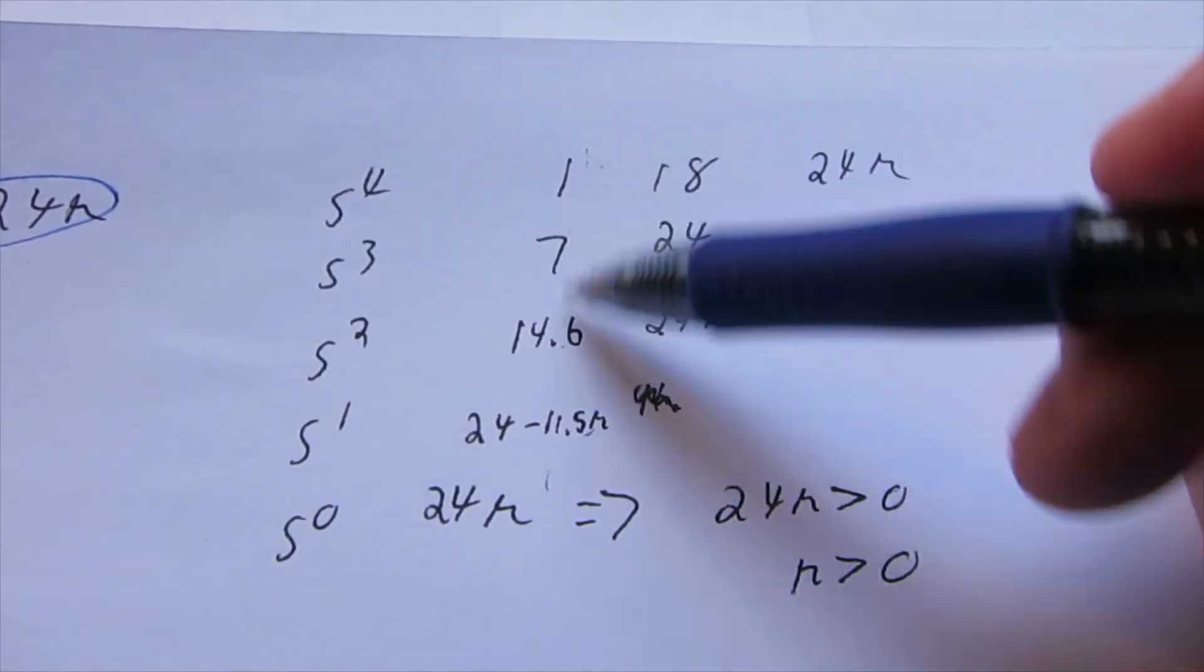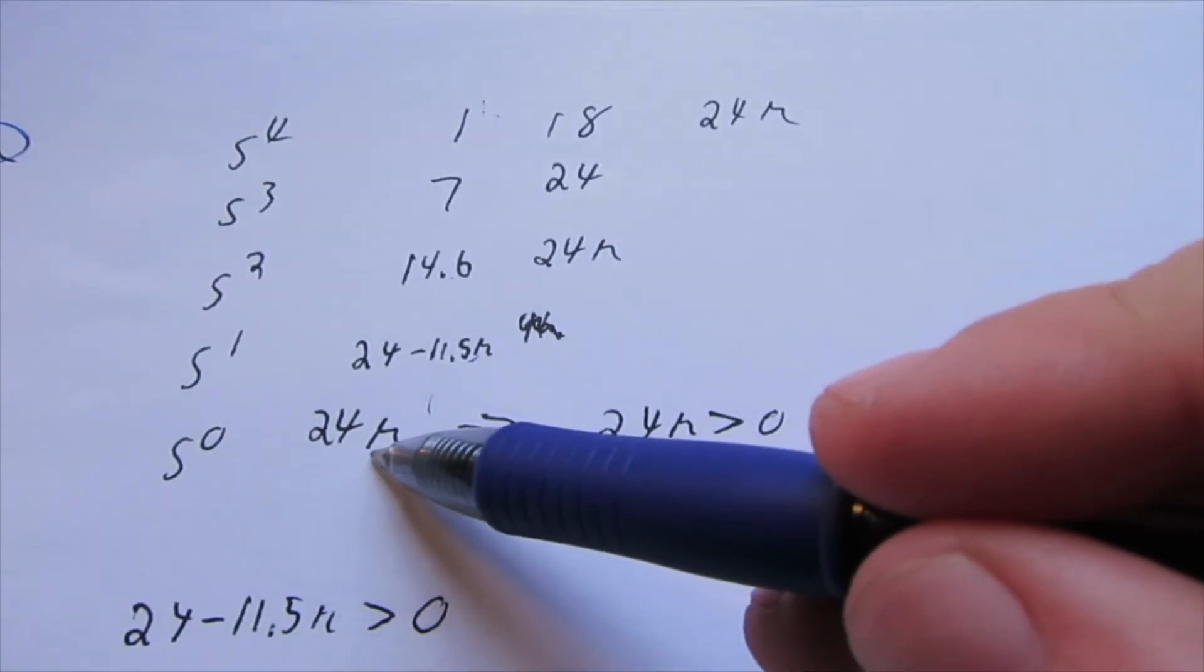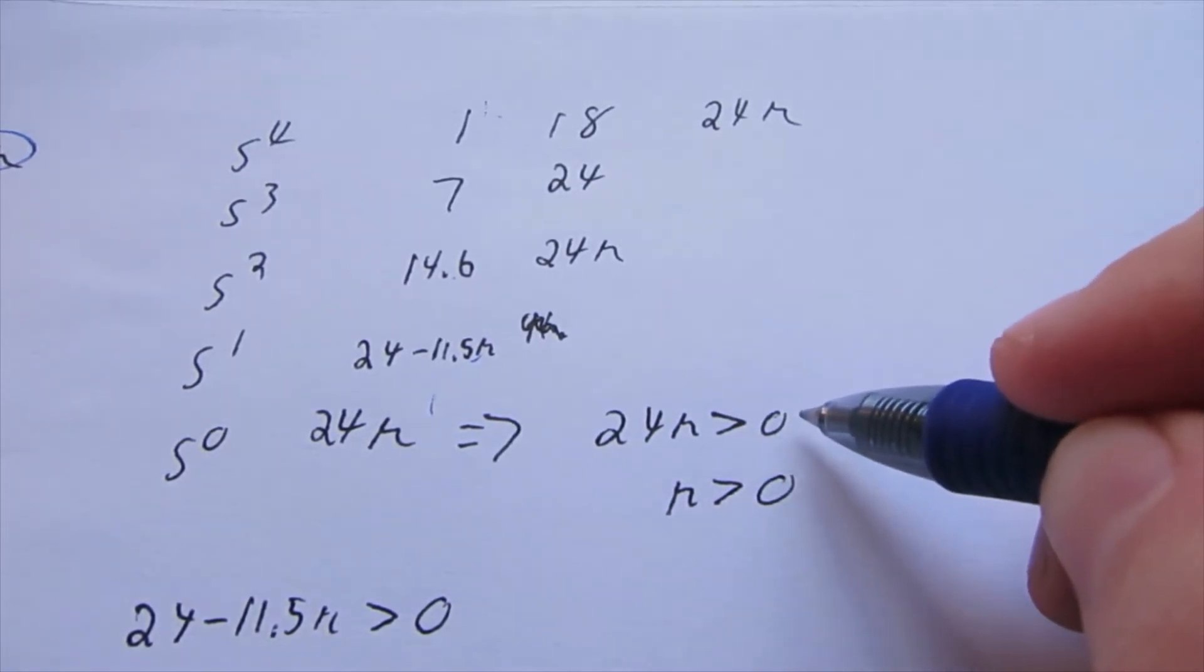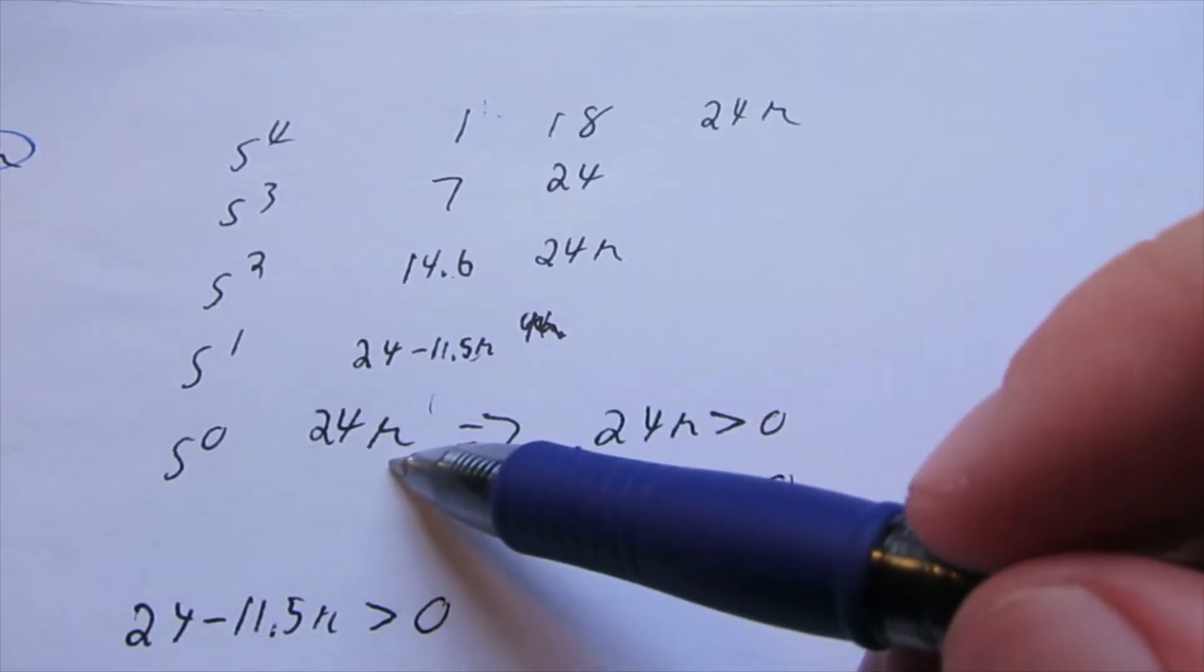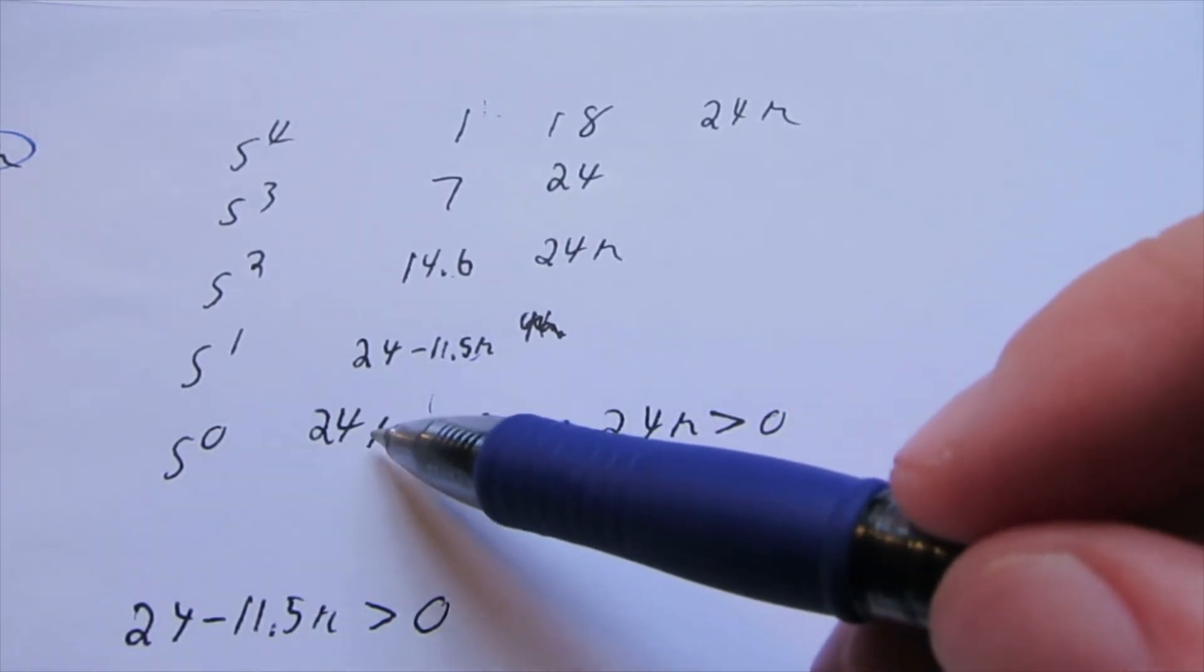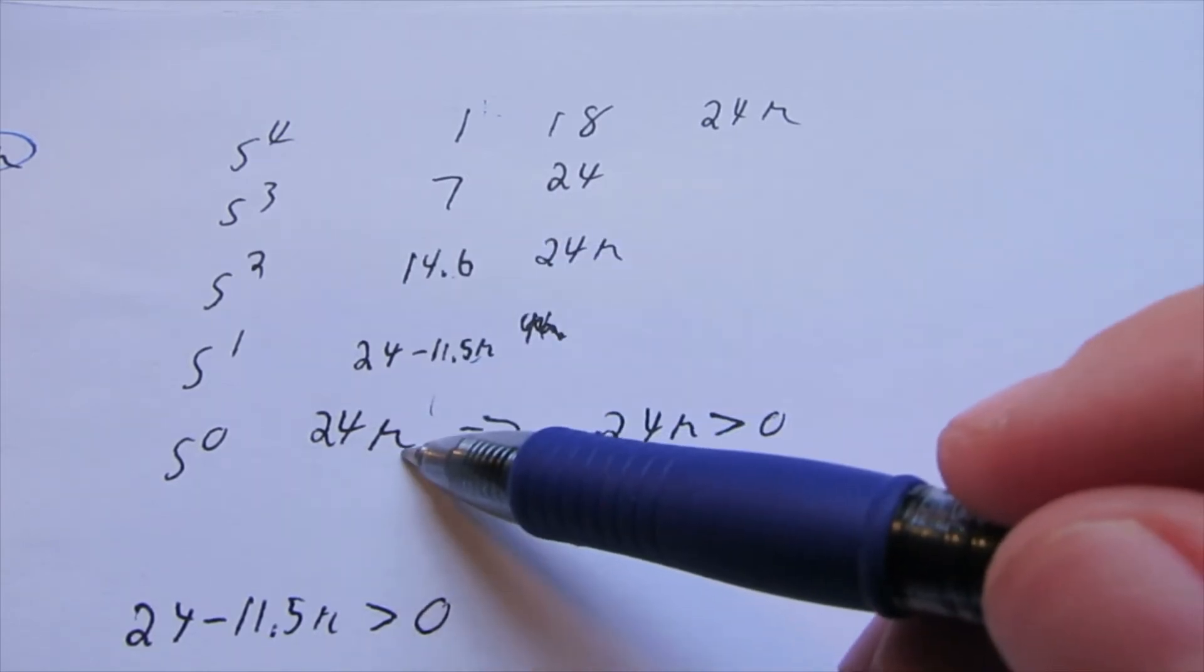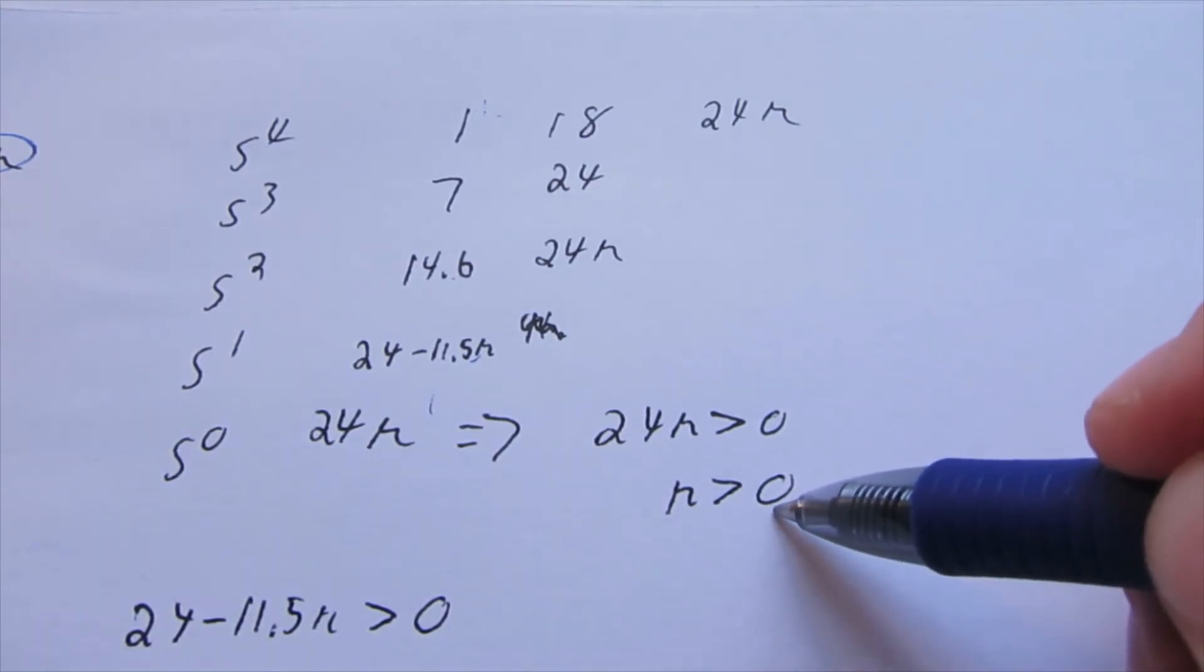And we want to look at everything in this first column here. So, with this last row, we have 24K. So, 24K needs to be greater than 0, which means K needs to be greater than 0. Because if K is anything not greater than 0, if it's negative, and this is negative, that means we're guaranteed to have a sign change. And we don't want that. So, we know at least K needs to be greater than 0.